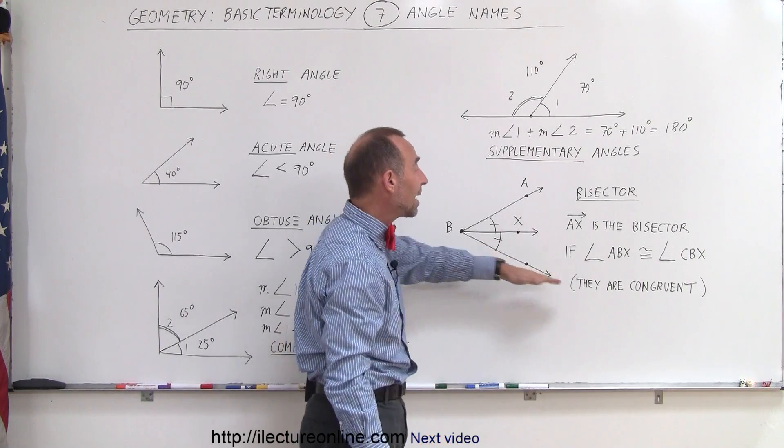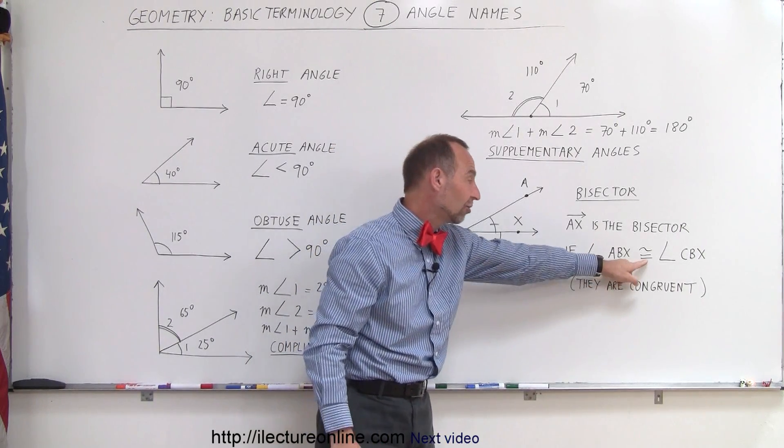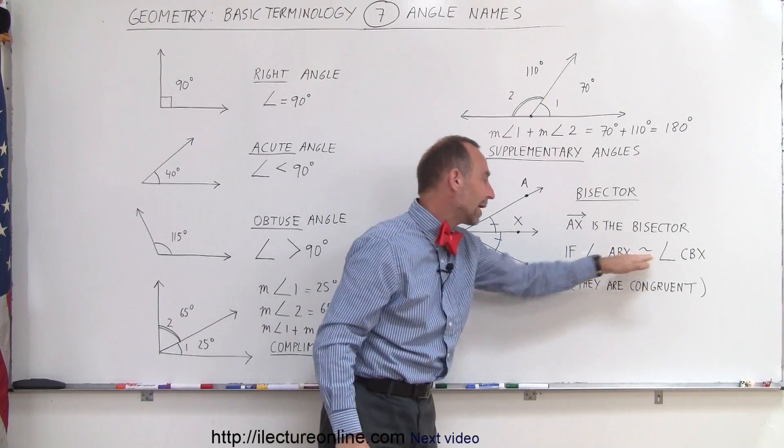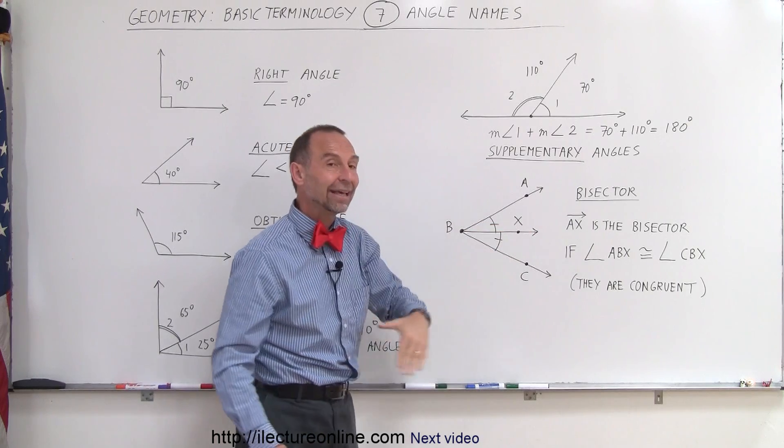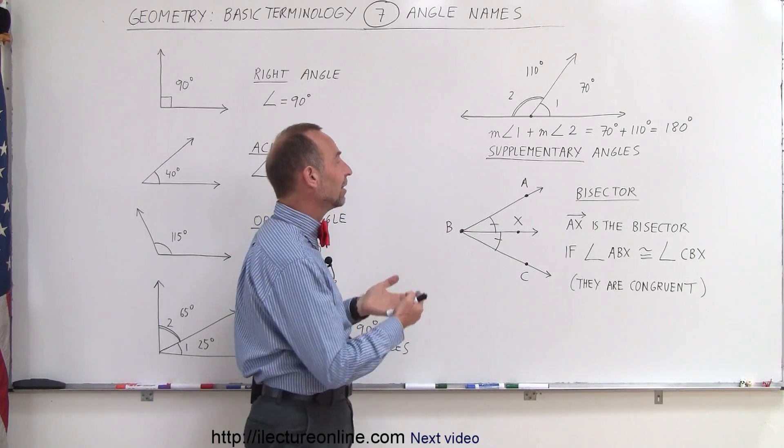And so, therefore, we can say that those two angles are congruent. And this is the symbol that we use to indicate that those two angles are congruent. If they're the same measure, then BX is a ray that is called the bisector.